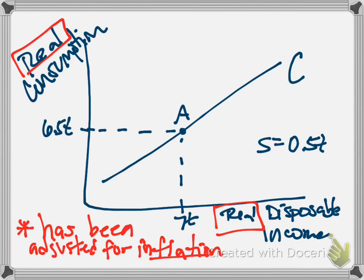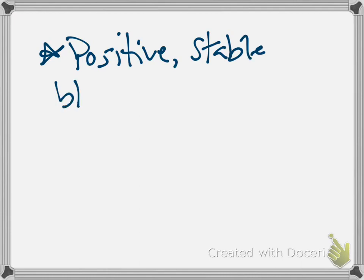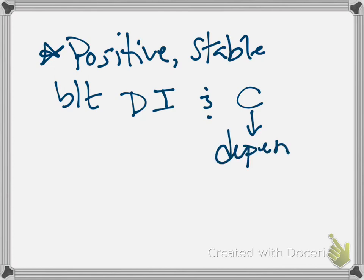What can we say about the consumption function? There is a positive and stable relationship between disposable income and consumption. Positive meaning that the variables move in the same direction. Disposable income is the independent variable. Consumption is the dependent variable.